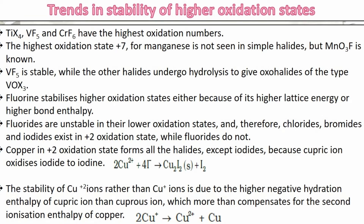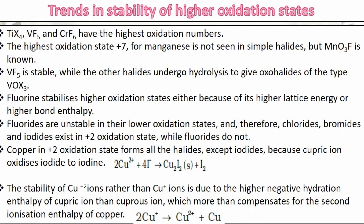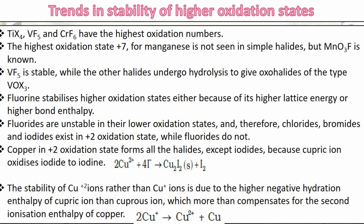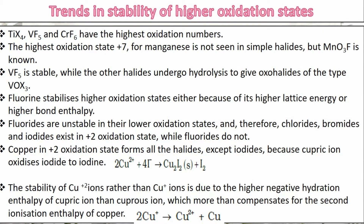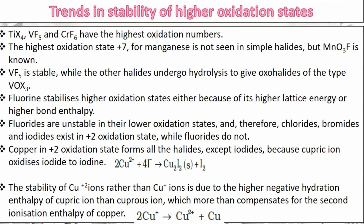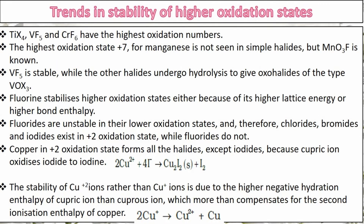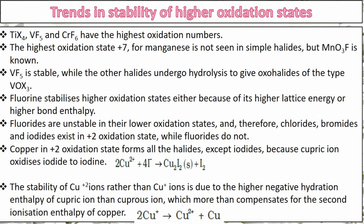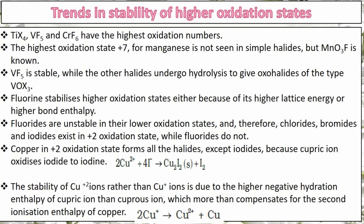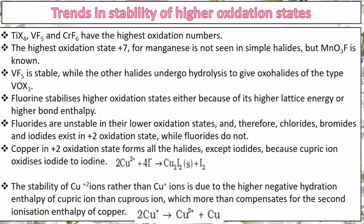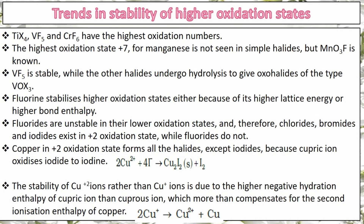Vanadium pentachloride undergoes hydrolysis to form vanadium oxytrihalide, whereas vanadium pentafluoride is stable and does not readily undergo hydrolysis. Metal fluorides are unstable when metals are in their lower oxidation states, because fluorine is highly electronegative and oxidizes the metal to its higher oxidation state.